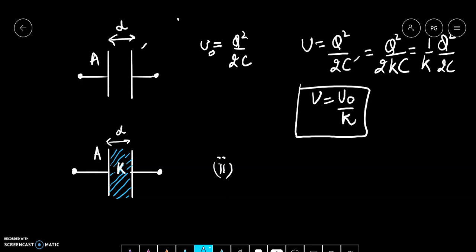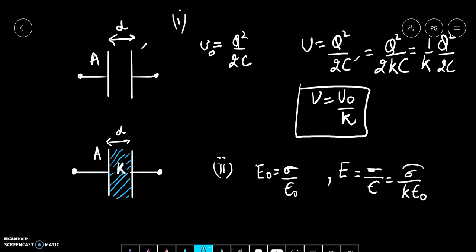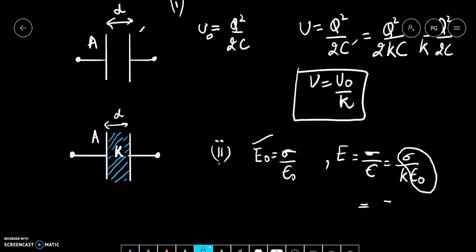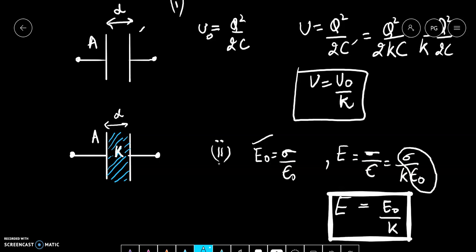Now let us talk about the electric field. When there is vacuum between the plates, E₀ equals sigma upon epsilon-naught. When there is a medium between the plates, E equals sigma upon epsilon, where epsilon equals K times epsilon-naught. So E equals sigma upon K·epsilon-naught, which equals E₀ upon K. Therefore, the electric field becomes 1/K times the original value. Similarly, the energy stored in the capacitor also becomes 1/K times the original value.